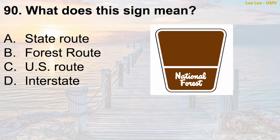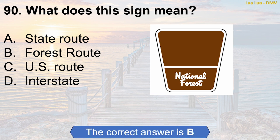Question 90: What does this sign mean? A. State route. B. Forest route. C. U.S. route. D. Interstate. The correct answer is B: Forest route.